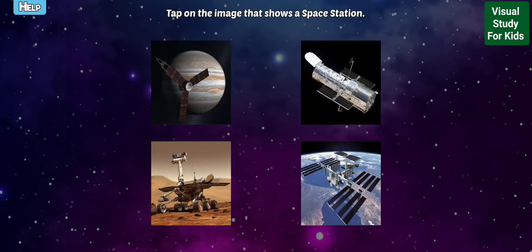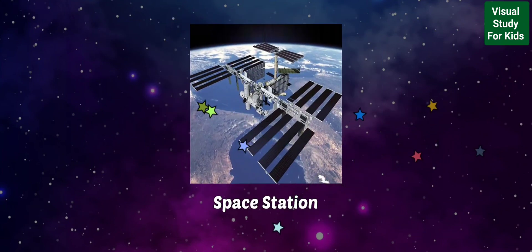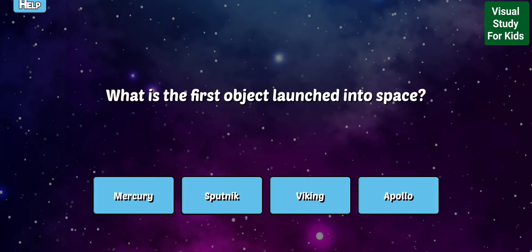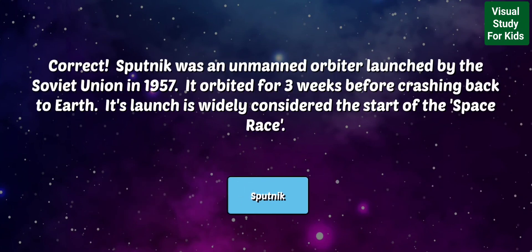Tap on the image that shows a space station. A space station is a permanent habitat in outer space. Astronauts live and work there for a long time before returning back to Earth. The International Space Station pictured here is bigger than a soccer field and holds a crew between three and six people. Keep trying! Awesome!